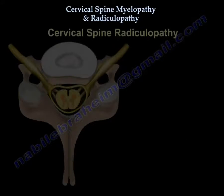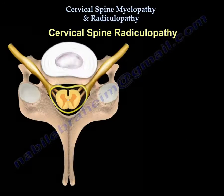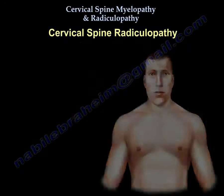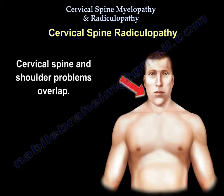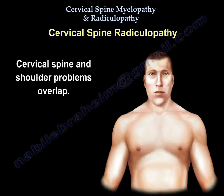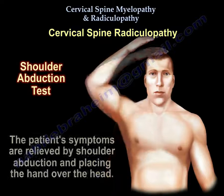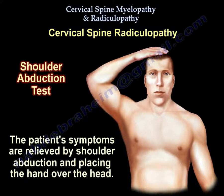Now let's go to cervical radiculopathy. We know that cervical spine and shoulder problems overlap. You know the condition is of cervical etiology if relief of pain occurs with shoulder abduction by placing the hand over the head.